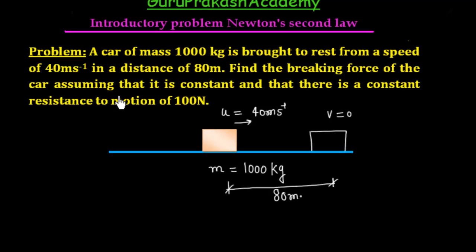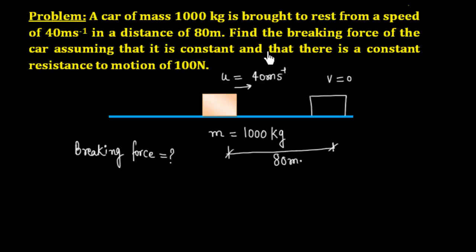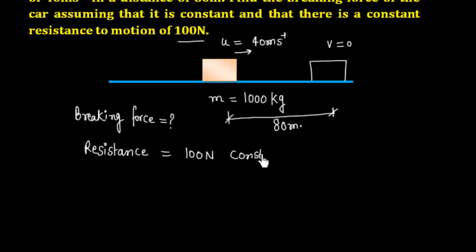We need to find the braking force applied by the car, assuming it is constant. In addition to the braking force, there is also a constant resistance to motion of 100 N, which comes from friction between the tyres and the floor.